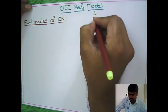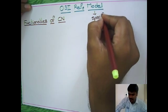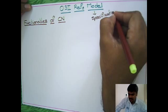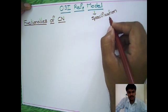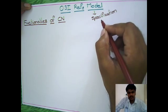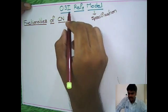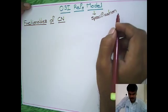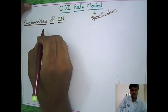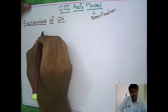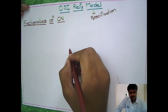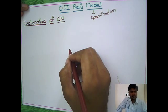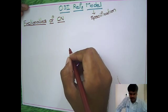We can say the OSI model is a specification. Specification, in the sense, it will give guidelines on what things you have to provide in your developing technology. OSI Reference Model is one such specification. Whenever you want to develop a computer network technology, you need a set of functionalities to provide in your network technology.